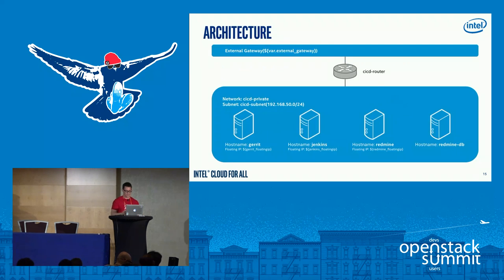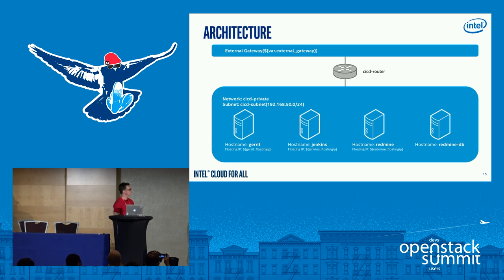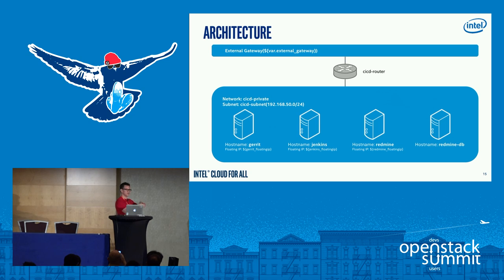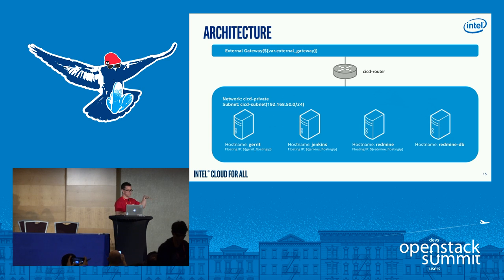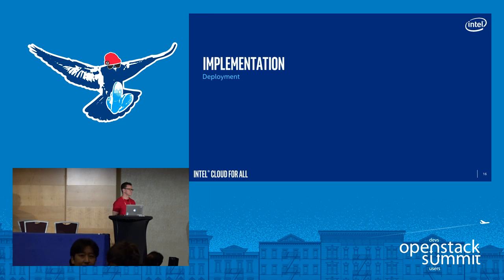The first architecture I proposed to integrate all these components uses four servers. Three of them host the different components — one for Gerrit, one for Jenkins and Redmine — and if you notice, three of them have floating IPs for external access. The fourth server only contains a database. I know this is a basic architecture, but the idea is to start collecting good practices and improve the distribution over time.